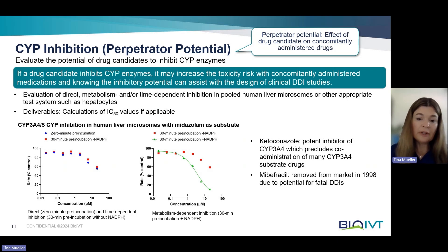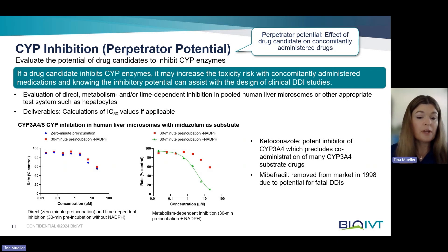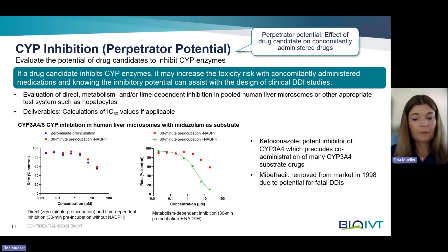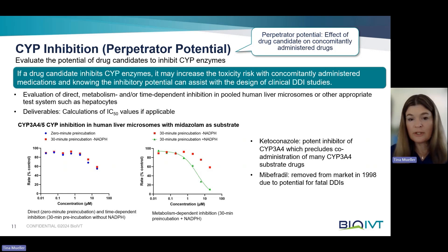Typically, different types of inhibition are evaluated, namely direct inhibition as well as time- and metabolism-based inhibition. The effect is assessed at different concentrations and IC50 values are calculated if applicable. Follow-up experiments are conducted if time- or metabolism-based inhibition is seen.